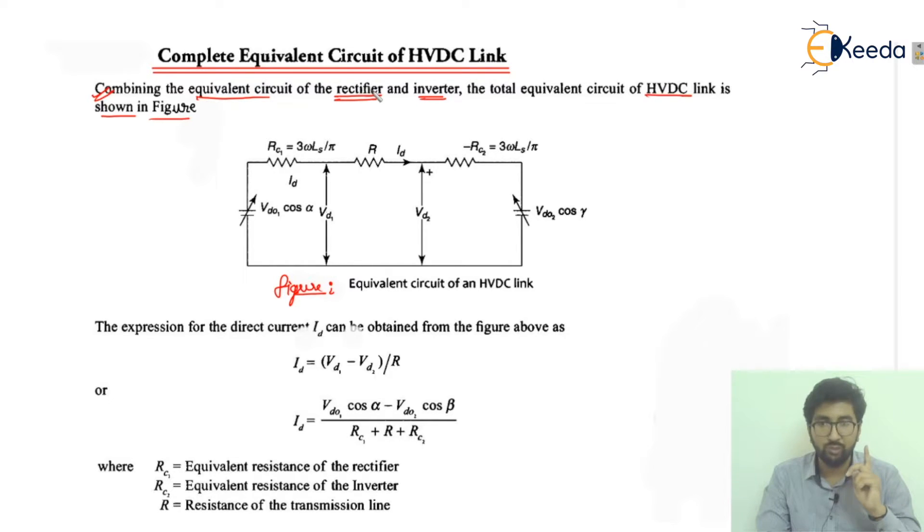Look at the diagram carefully. Now look at this when you see here, the voltage value is variable because it is varying. VDO1 cos alpha - it is varying on the basis of alpha, that is the firing angle.